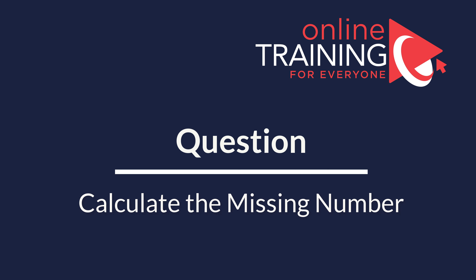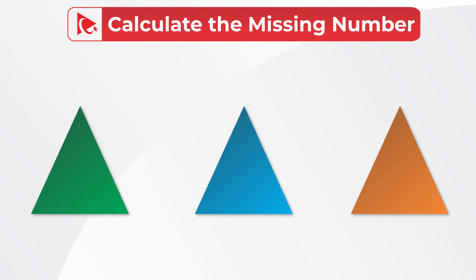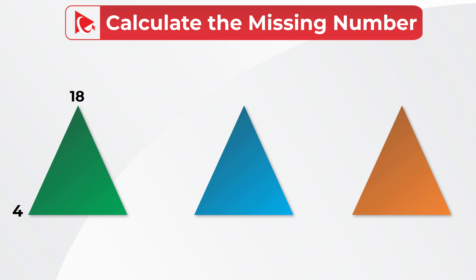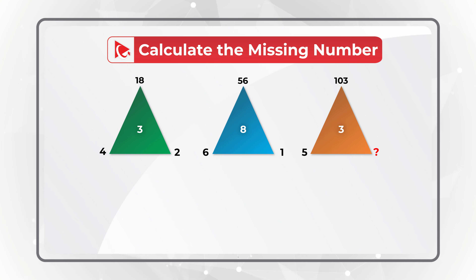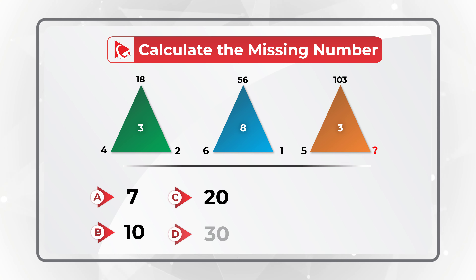Here's a very interesting question to see how quickly and effectively you can solve the challenge. You're presented with three triangles, each having numbers in the corners and a number in the middle. The first triangle has outside numbers 4, 18, 2 and middle number 3. The second has outside numbers 6, 56, 1 and middle number 8. The third triangle has 3 in the middle and numbers 5 and 103 on the outside, with a missing upper-right corner number. Choices: A: 7, B: 10, C: 20, D: 30.